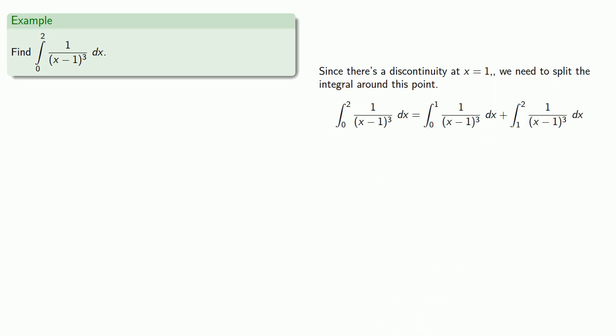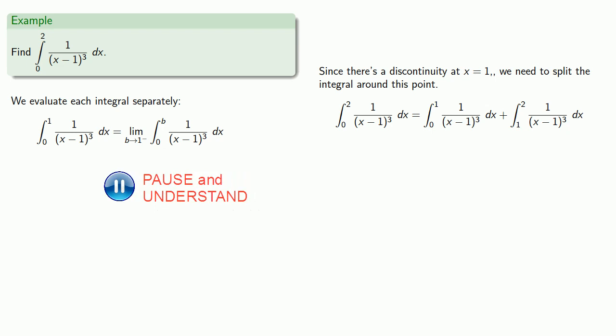Let's evaluate each of these integrals separately. We'll take that first integral from 0 to 1, and because we have that discontinuity at 1, we'll limit away from that discontinuity. We'll find the antiderivative and evaluate it.